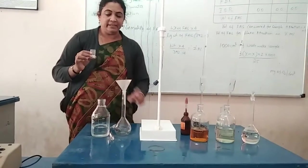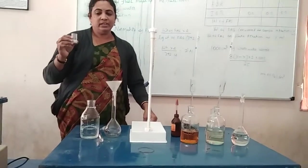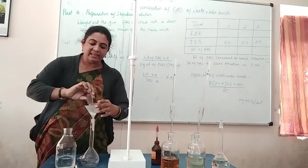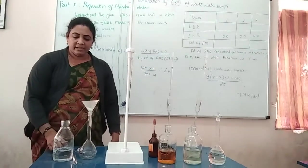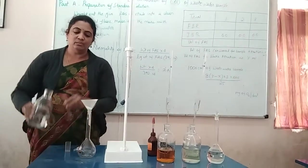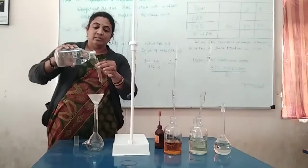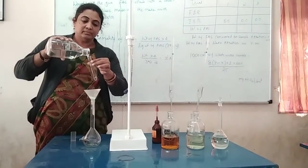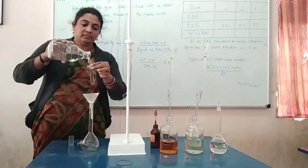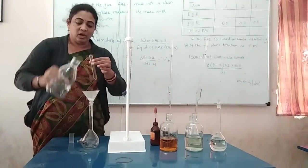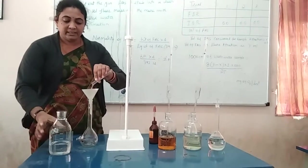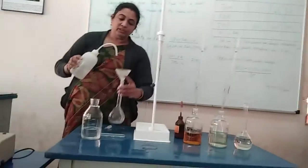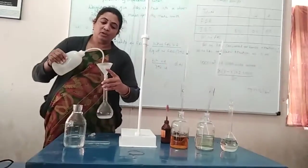First you have to wash all the apparatus cleanly with distilled water. Then weigh the given salt and transfer it into a cleanly washed 250 ml volumetric flask. Add sulphuric acid first, then you should add water — always add sulphuric acid to the salt first, then add water.